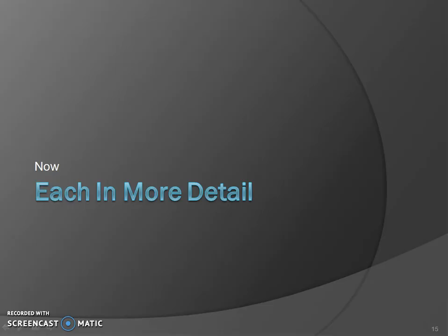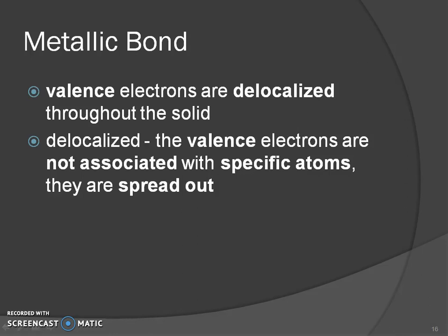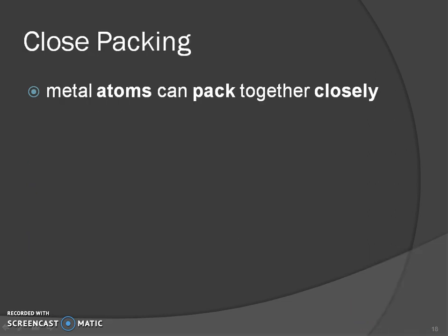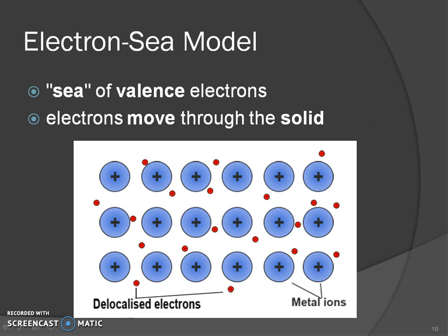Let's look at each type in a bit more detail. The metallic bond involves valence electrons that are delocalized — meaning those electrons are not part of any one atom. They float around, spreading from one atom to another. They are not being shared or transferred; they're just all over the place, which is why metals conduct electricity very well. The atoms are usually very closely packed together, described by the electron sea model.